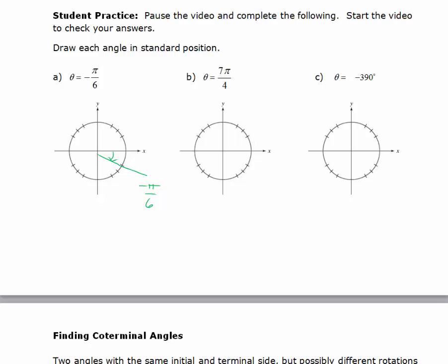For 7 pi over 4, I'm going to use multiples of pi over 4, and it will help me to use the x-axis. So this would be 4 pi over 4. This would be 8 pi over 4 if I rotate all the way around, because that's 2 pi. So if I want 7 pi over 4, I just want one fewer pi over 4. So I'm going to draw my angle from here to here. This would be considered 7 pi over 4, which is 1 less pi over 4 than if we went all the way around.